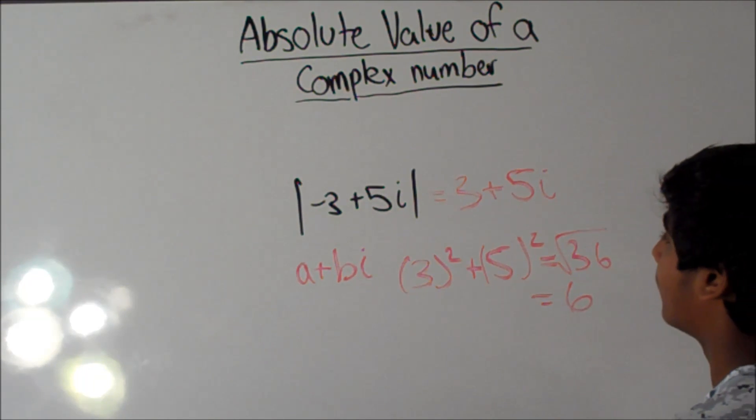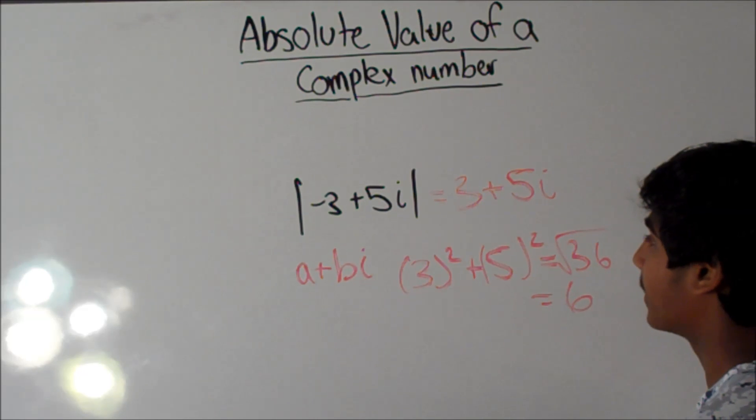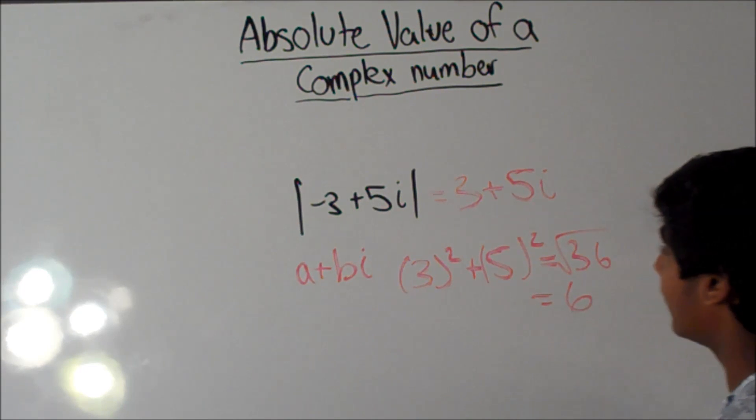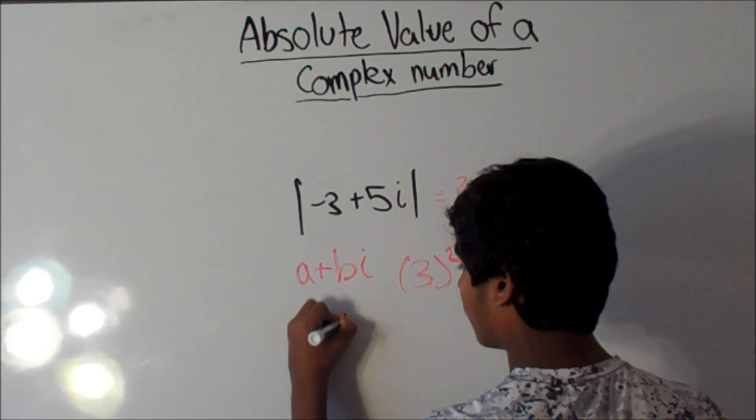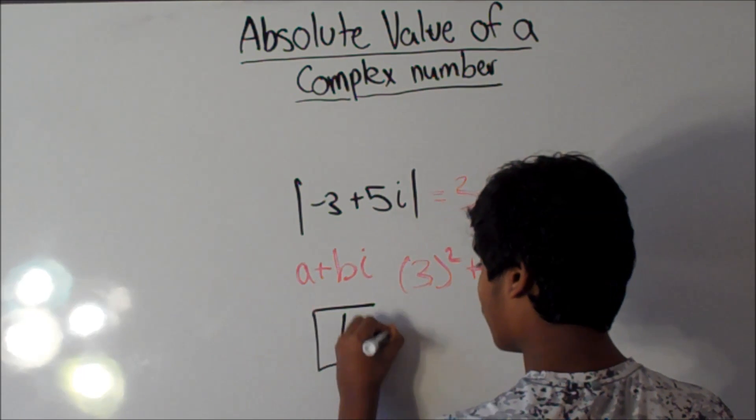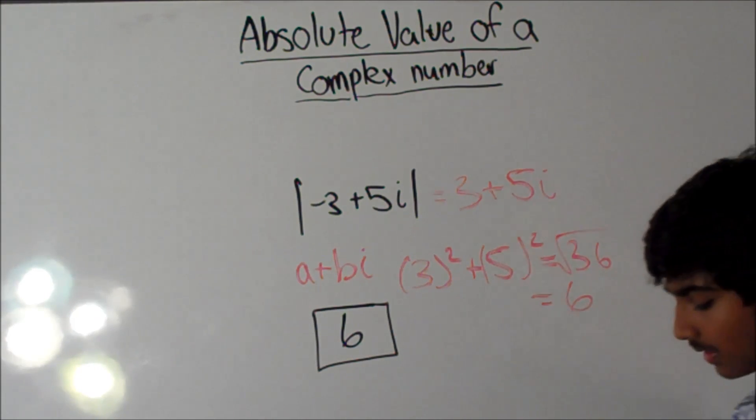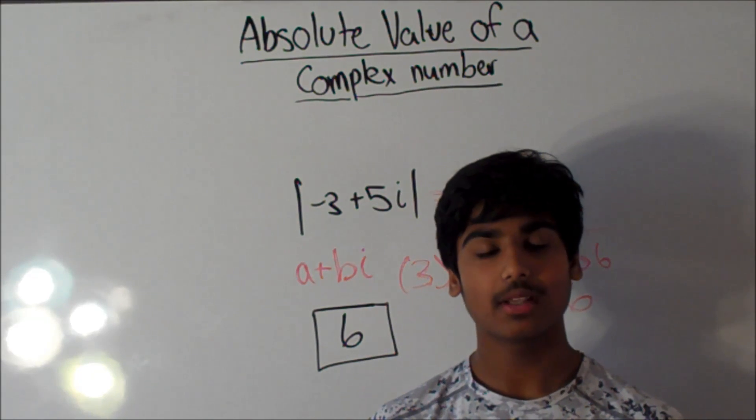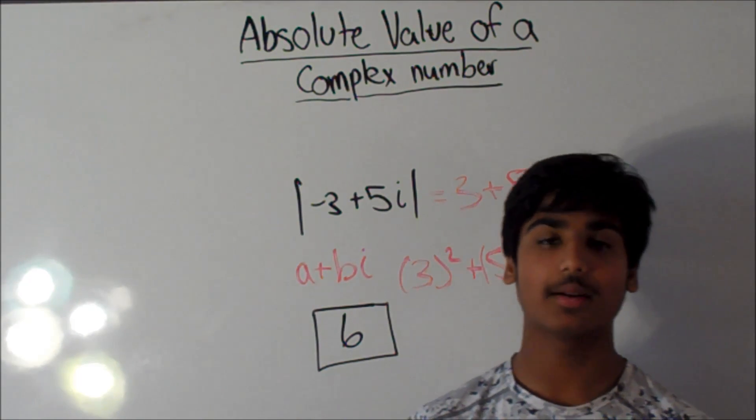So, the absolute value of negative 3 plus 5i is 6. Today, we learned about how to find the absolute value of a complex number.